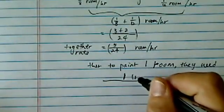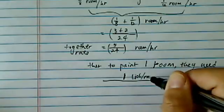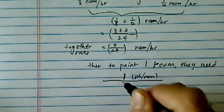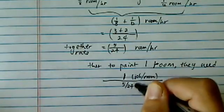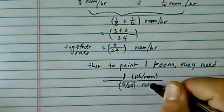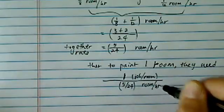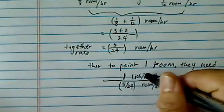Because this is 1 job, or 1 room, divided by the rate, which is 5 over 24 room per hour. So, the units actually works out. This is per room, job or the room.